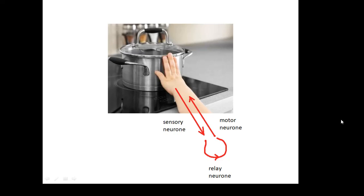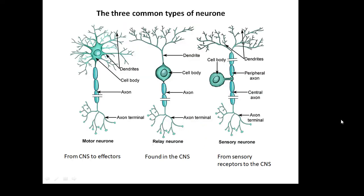There are three types of neuron. Sensory neurons carry signals from receptors to the CNS. Motor neurons carry signals from the CNS to effectors — usually muscles — telling your muscle to contract, for example to pull your hand away. Relay neurons join them together and are found in the CNS; your brain is full of them. Remember: motor neurons go from the CNS to effectors, sensory neurons carry information from receptors such as pressure or temperature sensors to the CNS.